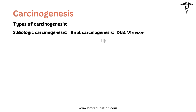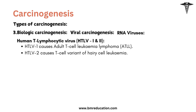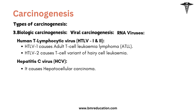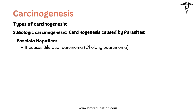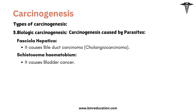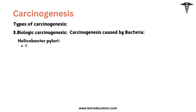RNA viruses include: Human T-lymphotropic virus (HTLV) — type 1 causes adult T-cell leukemia/lymphoma, and type 2 causes a T-cell variant of hairy cell leukemia. Hepatitis C virus causes hepatocellular carcinoma. Carcinogenesis caused by parasites: Fasciola hepatica causes bile duct carcinoma, and Schistosoma haematobium causes bladder cancer. Carcinogenesis caused by bacteria: Helicobacter pylori causes gastric carcinoma.